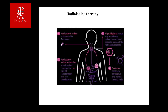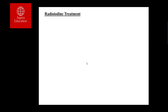Radioiodine therapy involves ingesting radioactive iodine as a capsule. After absorption from the stomach into the blood, the thyroid gland concentrates it via the sodium-iodine symporter. Being radioactive, it destroys the thyroid follicles through local radiation. There are important precautions and contraindications to be aware of before administering this treatment.